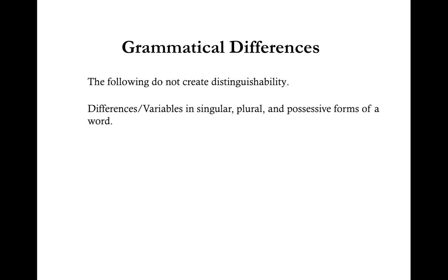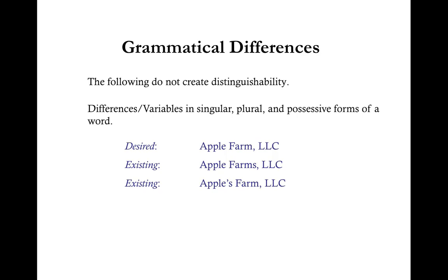Grammatical differences also do not create distinguishability. Differences in singular, plural, and possessive forms of a word are not sufficient. For example, if your desired LLC name is Apple Farm LLC, and during the search you found Apple Farms LLC or Apple's Farm LLC, both of those names are too similar and your desired LLC name would not be available for use. An example of an alternative name would be Bob's Apple Orchard LLC.